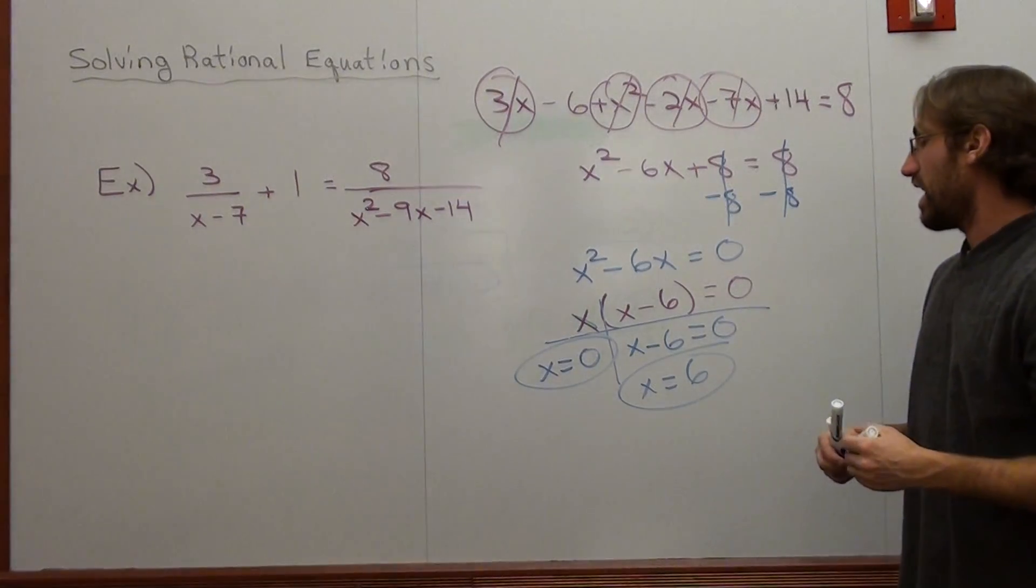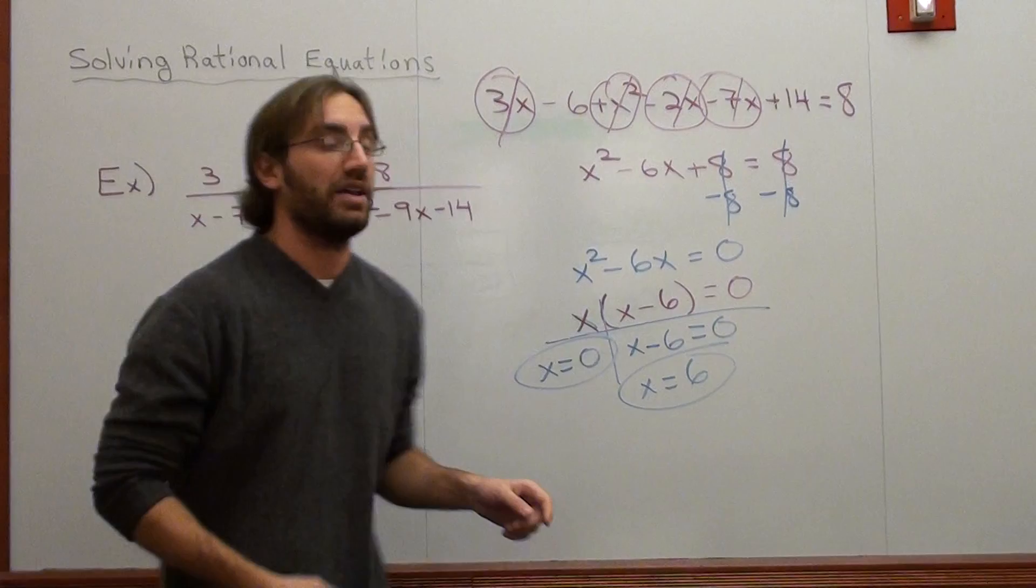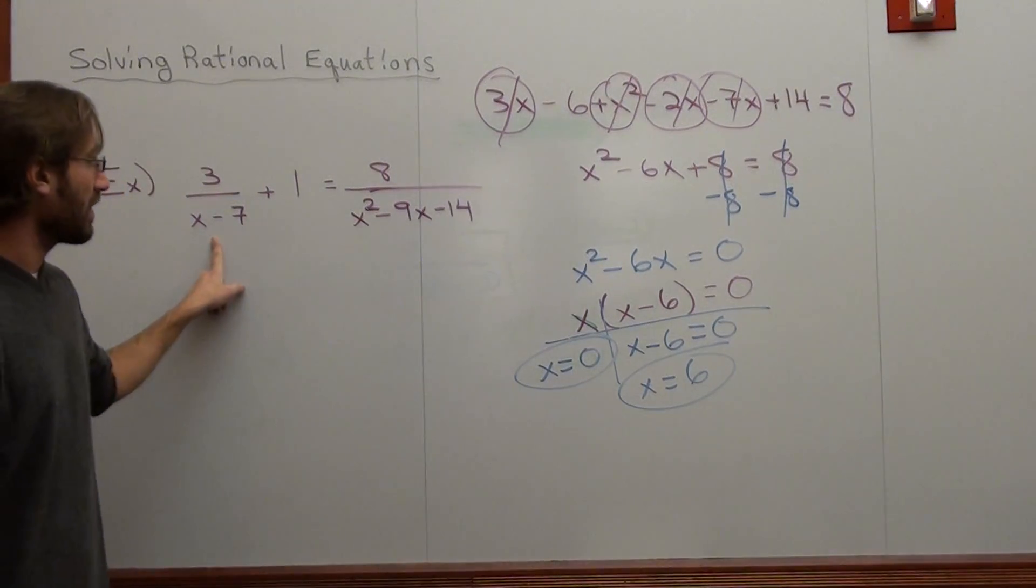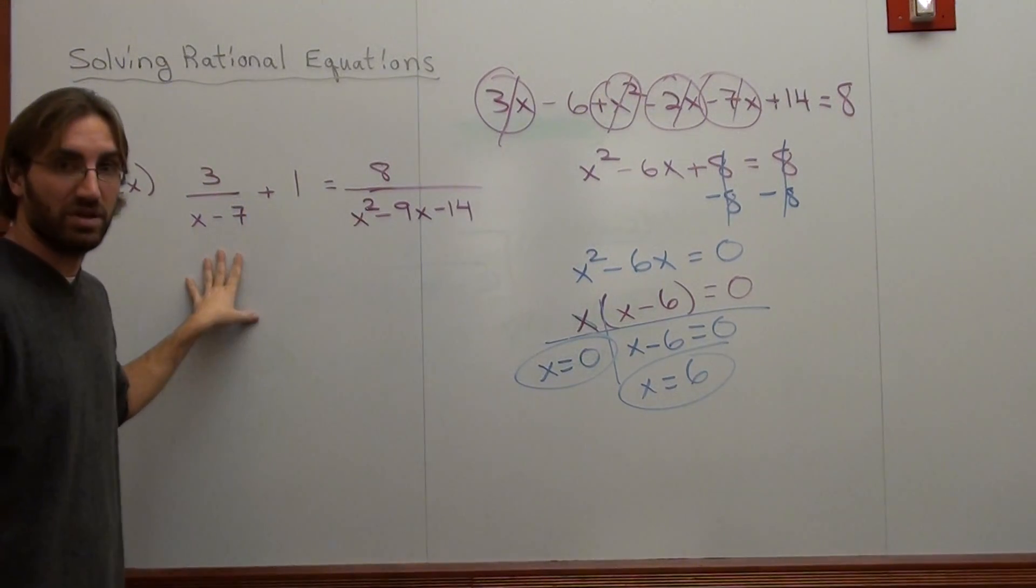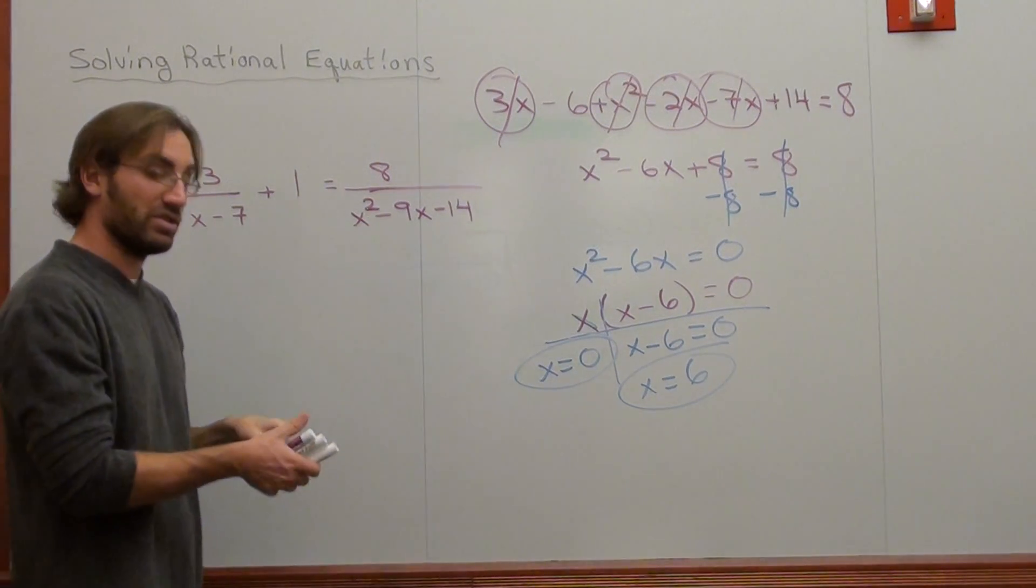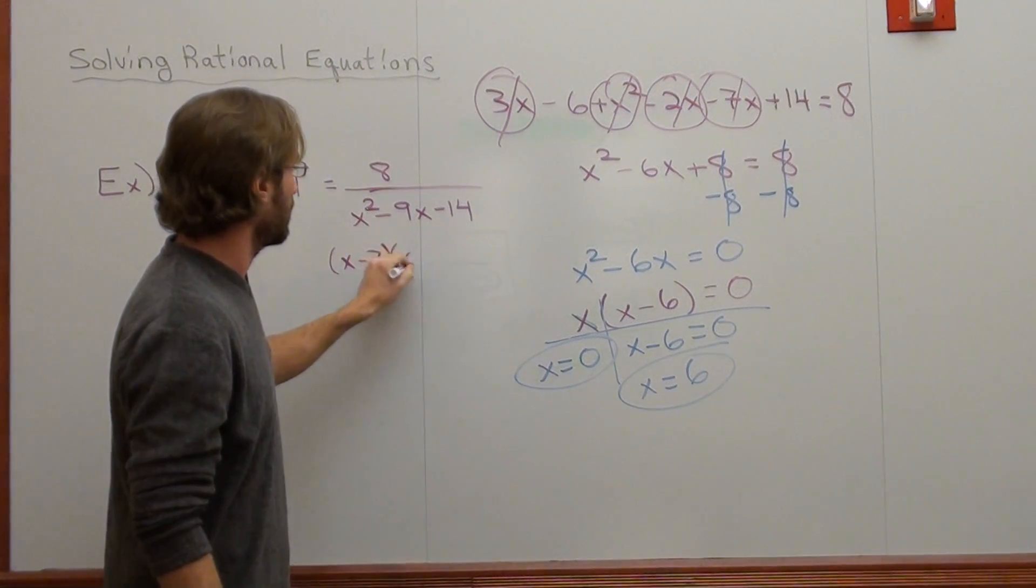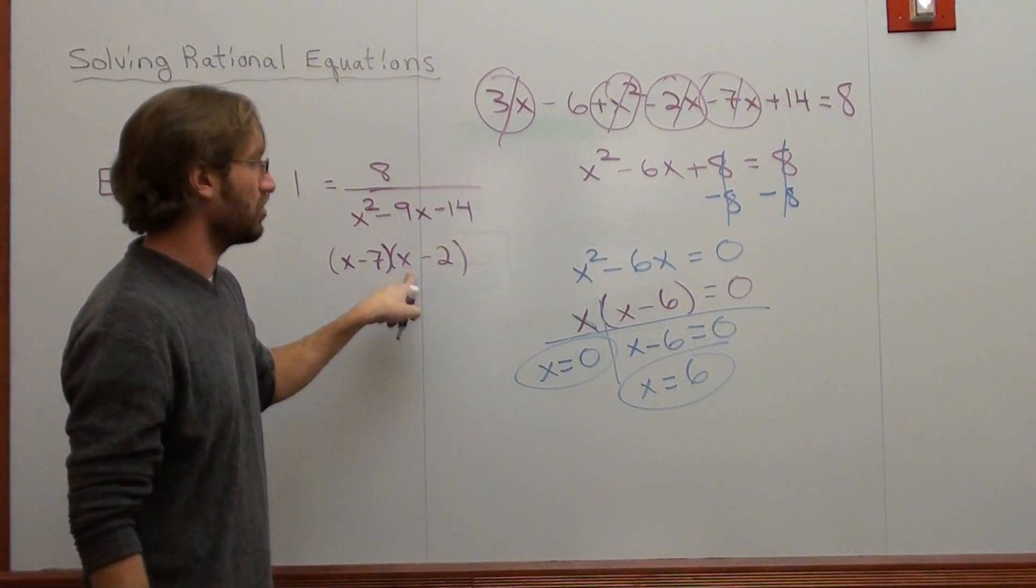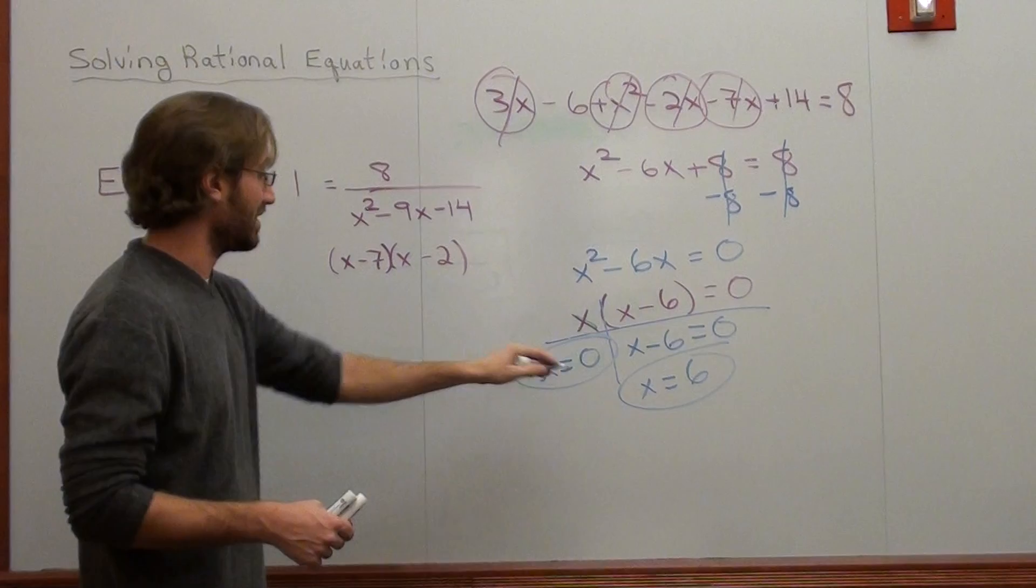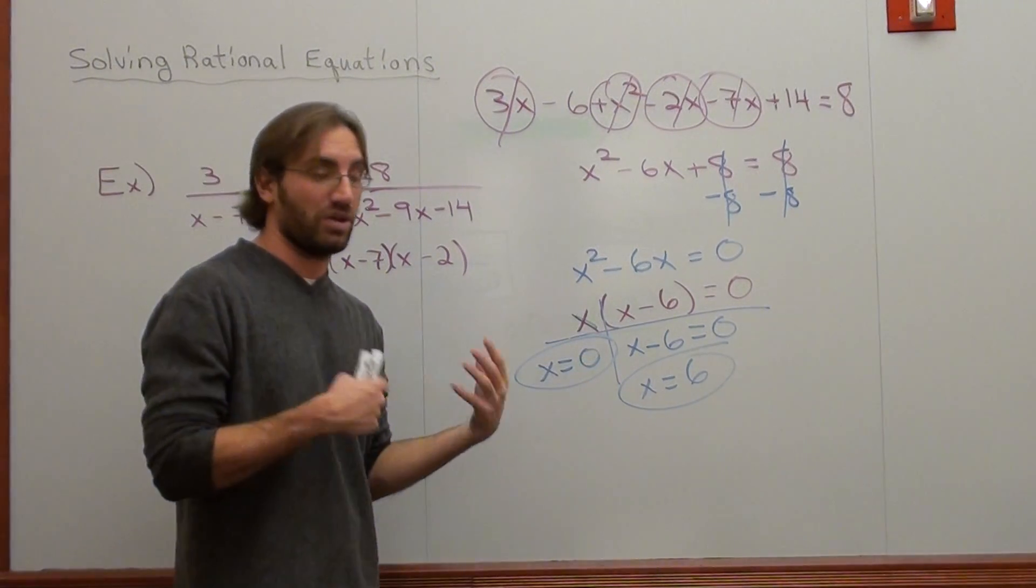And those are my two answers. And as long as I can substitute both those answers back into here, I'm fine. The answer can't be 7, because 7 minus 7 would be a 0 in the denominator. It won't work. And the answer can't be a 2, because this factored into this. And a 2 would make this denominator 0 as well. And since none of those answers are it, those answers satisfy the equation.